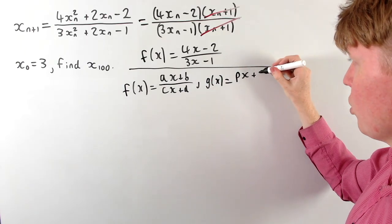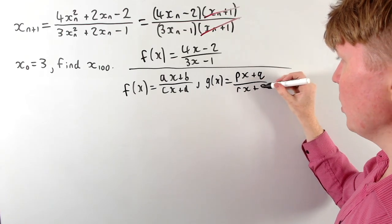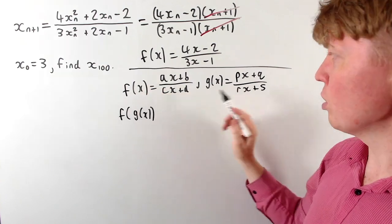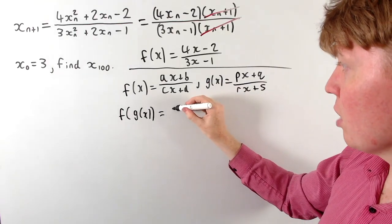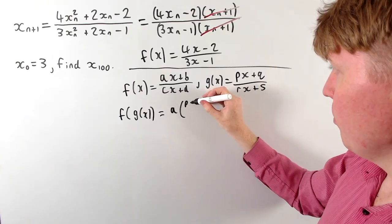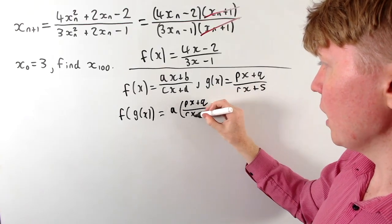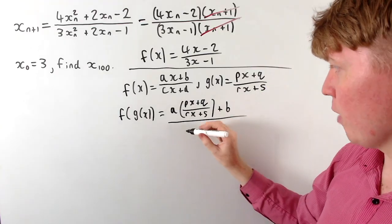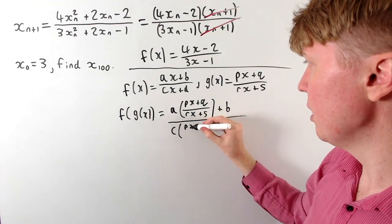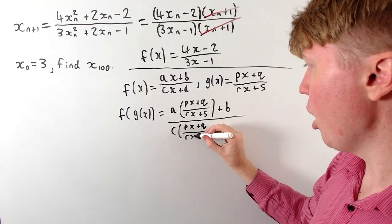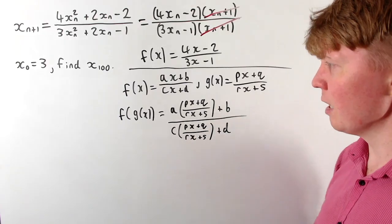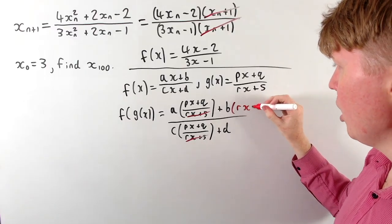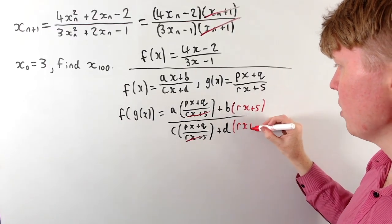Say g(x) = (px + q) / (rx + s). Let's calculate f(g(x)) — substituting x into g, then into f. In the numerator we get a times (px + q)/(rx + s) plus b, and in the denominator c times (px + q)/(rx + s) plus d. Multiplying numerator and denominator by rx + s, we get a(px + q) + b(rx + s) over c(px + q) + d(rx + s).